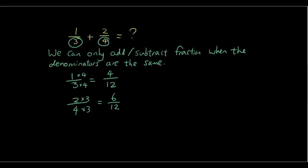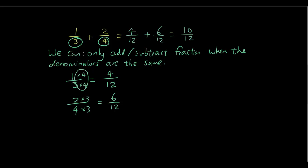So if one out of three equals four over twelve, and two out of four equals six over twelve, now we can add them. Four out of twelve plus six out of twelve gives us ten over twelve. Why did we multiply by 4? Because the denominator of the second fraction is 4, so if you multiply 3 by 4 you get 12, and the same thing happens when you multiply 4 by 3.